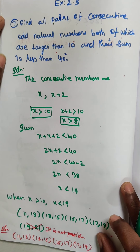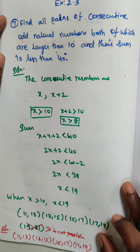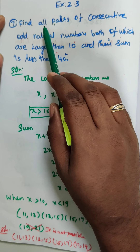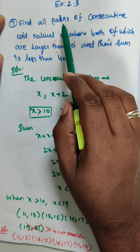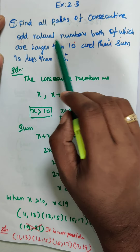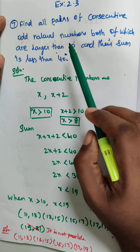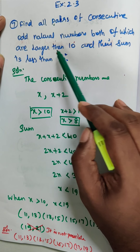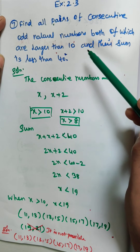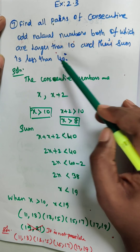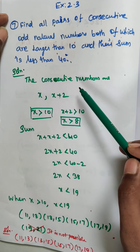Hi students, this is Dinesh here. Today we are going to discuss exercise 2.3, question number 7: find all pairs of consecutive odd natural numbers, both of which are larger than 10 and their sum is less than 40.